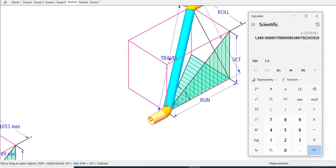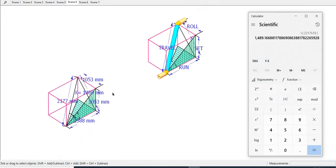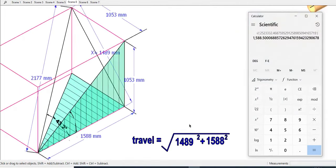Now calculate the value of the travel. The method is almost the same. Travel equals the root of the sum of the squares of X and the run.